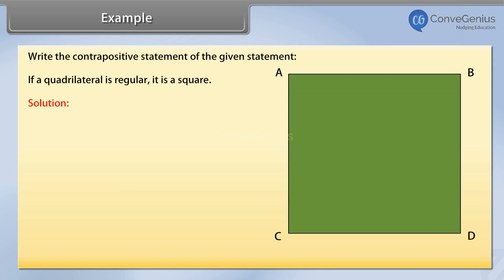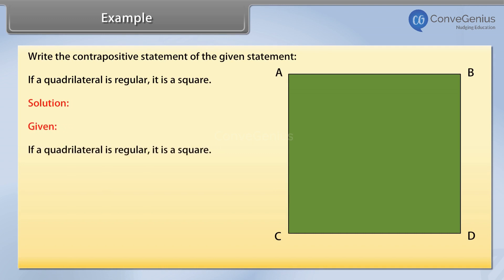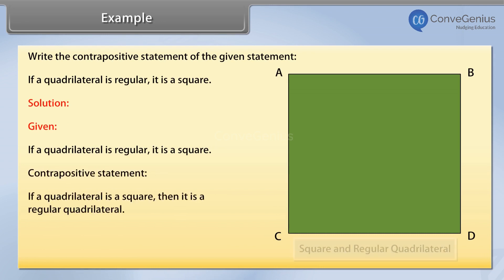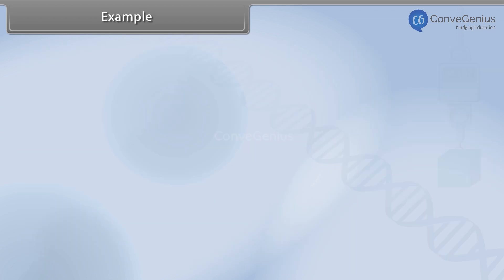Solution. Given: If a quadrilateral is regular, it is a square. Contrapositive statement: If a quadrilateral is not a square, then it is not a regular quadrilateral.